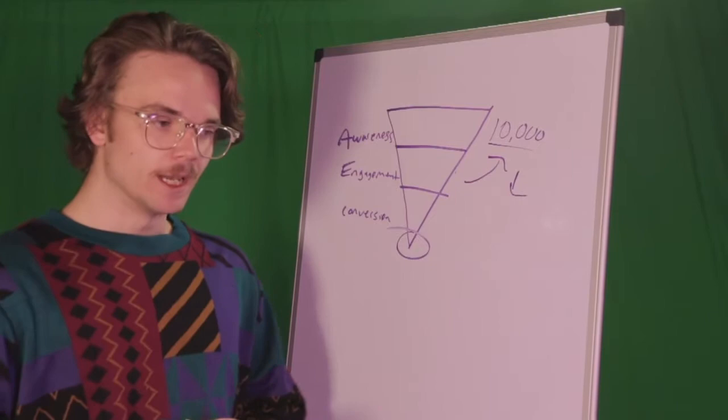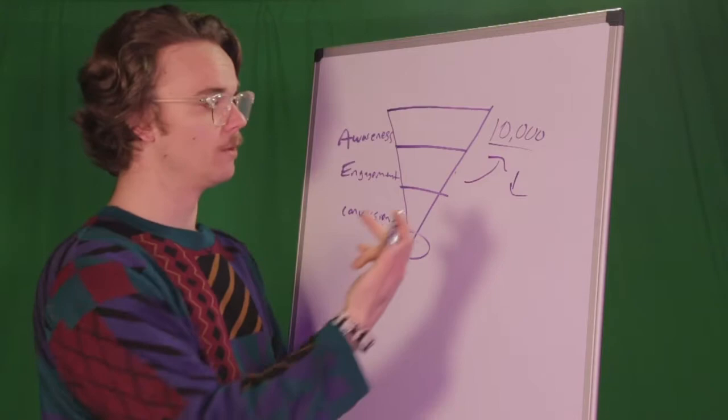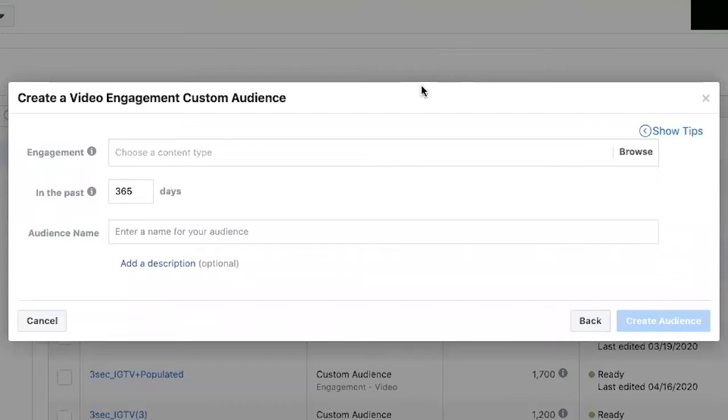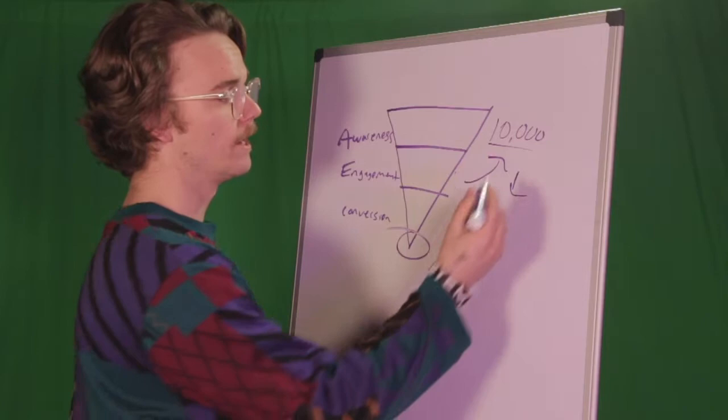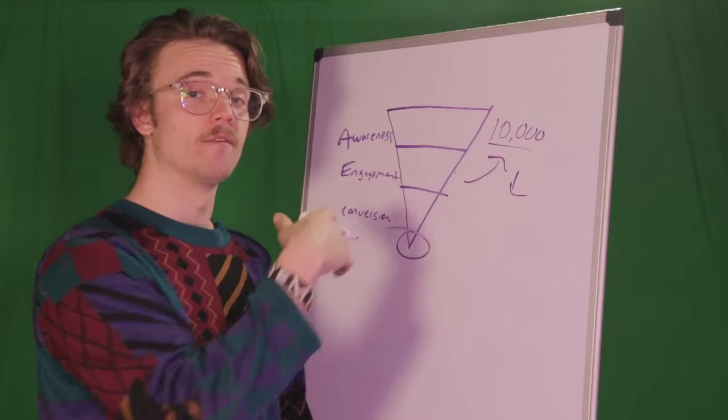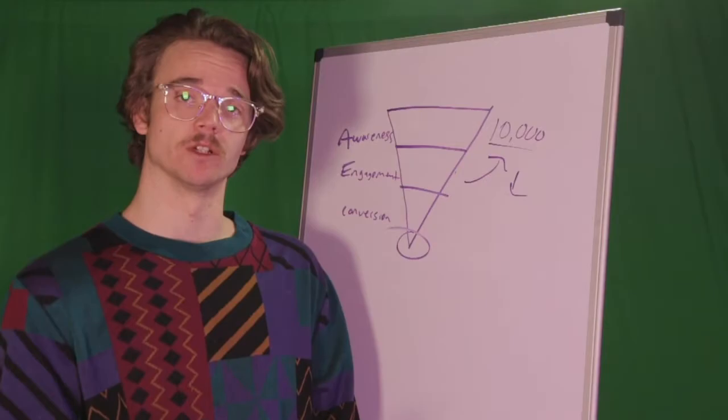And for context, oftentimes when we're creating a custom audience, we are creating it based on the indicators that other people are telling us that they want to learn more about our product or about our company or about our brand or about our story. And the way we can do that is the custom audiences that I mentioned that we can create, we can create them at different levels of engagement for our content. So for example, you can create a custom audience off of everyone who's watched a video for at least three seconds, 10 seconds, 25% of the video, all the way up to 95% of the video.